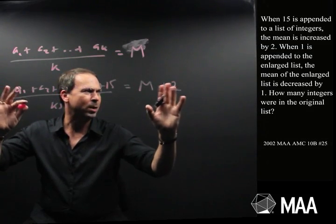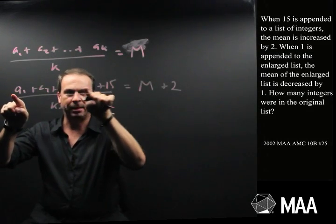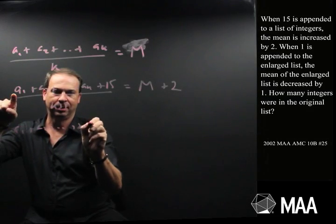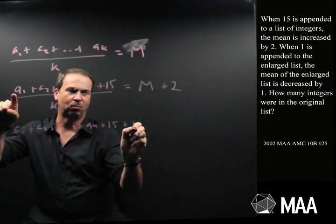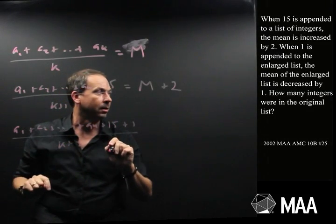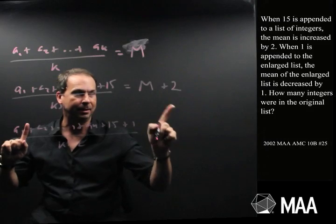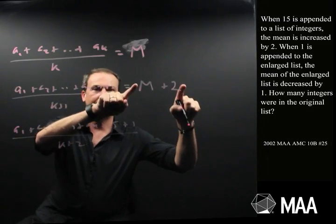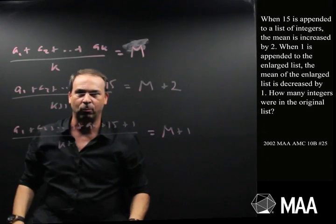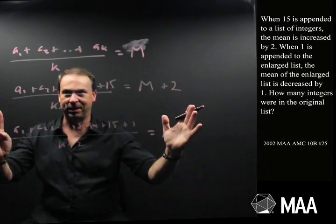Second sentence, when 1 is appended to the enlarged list, so there's my enlarged list, up to 15, and I put a 1 on this as well. I can do this, plus the 15, plus the 1. I've now got k plus 2 integers. The mean is decreased by 1. The mean of the enlarged list is decreased by 1. There's the mean of the enlarged list. This goes down by 1. It's now m plus 1.